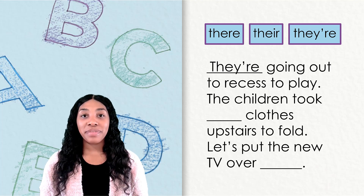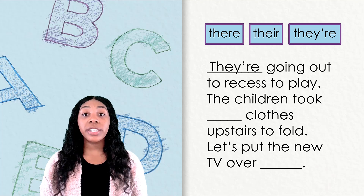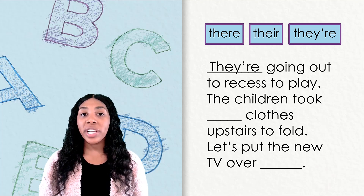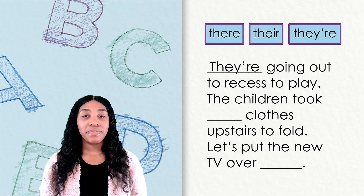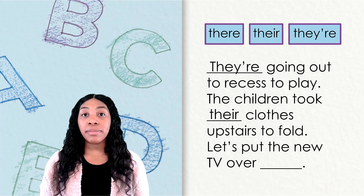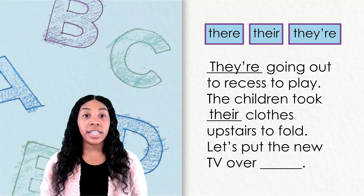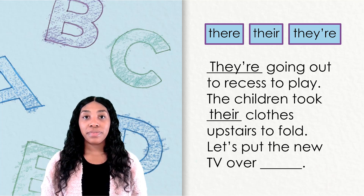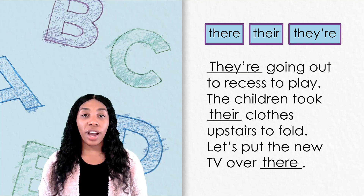Let's look at the next blank. The next blank seems to refer to clothes that belong to the children. T-h-e-i-r makes the most sense here. Let's take a look at the last blank. It seems to be talking about a place or a location to put the new TV. T-h-e-r-e belongs best in the last blank.